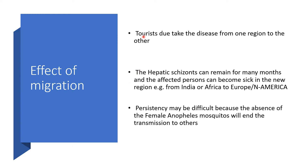The effect of migration: tourism and tourists have changed the map of the epidemiology of malaria by taking the disease from one region to the other. For example, the hypnozoites can remain for many months, and the affected persons can become sick in the new region — for example, from India or Sub-Saharan Africa to Europe or North America.